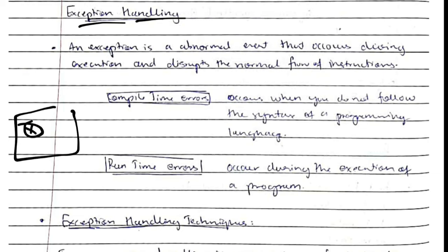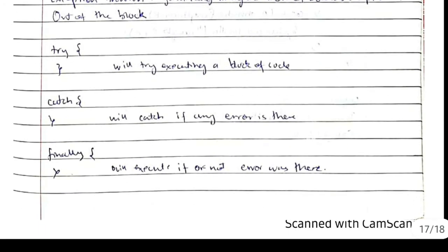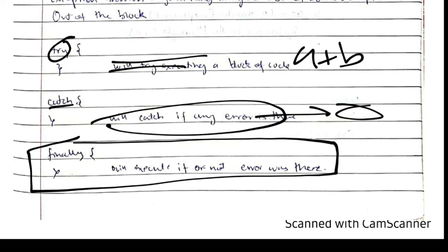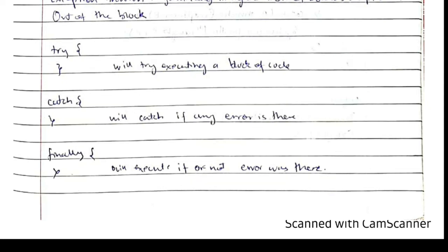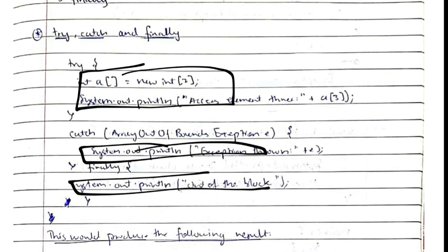Exception handling ensures that if an error occurs in one part of the program, the whole program does not stop — only that part is stopped and the rest continues running. There are five keywords: try, catch, finally, throw, and throws. Try and catch and finally are used together; throw and throws are used together. In the try block, you write code; the catch block catches errors; and the finally block always executes regardless of whether there was an error or not.